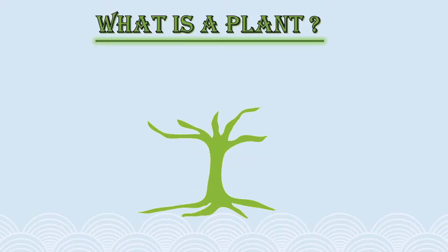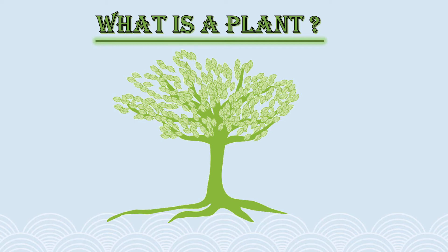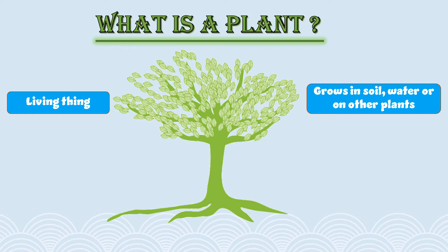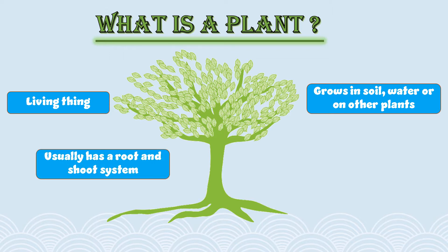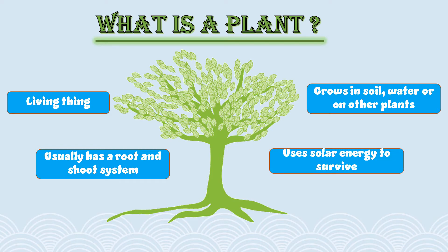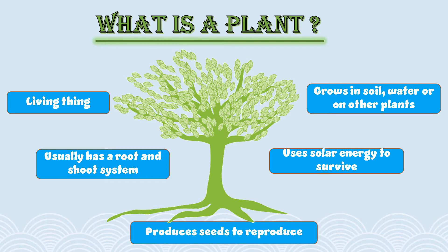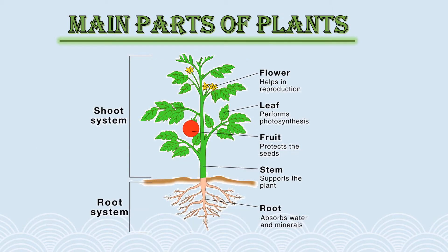What is a plant? Take a guess! It is a living thing. It grows in soil, water, or any other medium. It usually has a root and shoot system. It uses solar energy to survive and make its food. It produces seeds to reproduce. So a plant is a living thing that grows in soil or water, uses solar energy to make its food, and generally has roots, stem, leaves, and sometimes flowers and fruit.